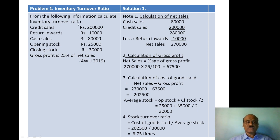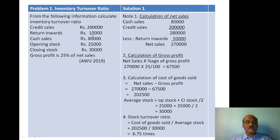What is the formula for inventory turnover ratio? Remember how inventory turnover ratio — also called stock turnover ratio — is to be calculated. The formula for inventory turnover ratio is: Cost of Goods Sold divided by Average Stock.